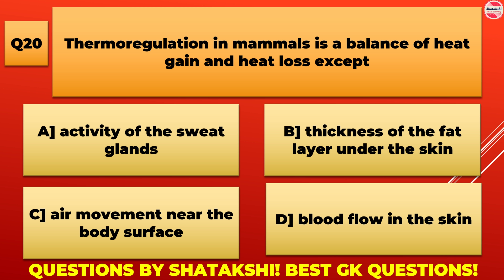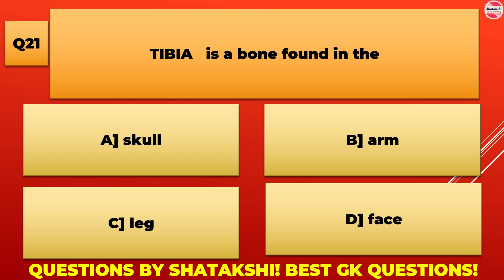Activity of the sweat glands is the correct answer. Tibia is a bone found in the: A. Skull, B. Arm, C. Leg, D. Face. C. Leg is the correct answer.